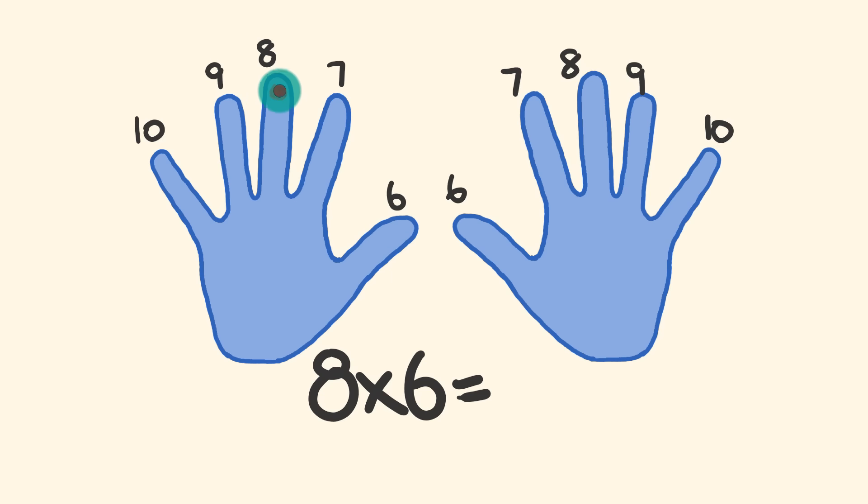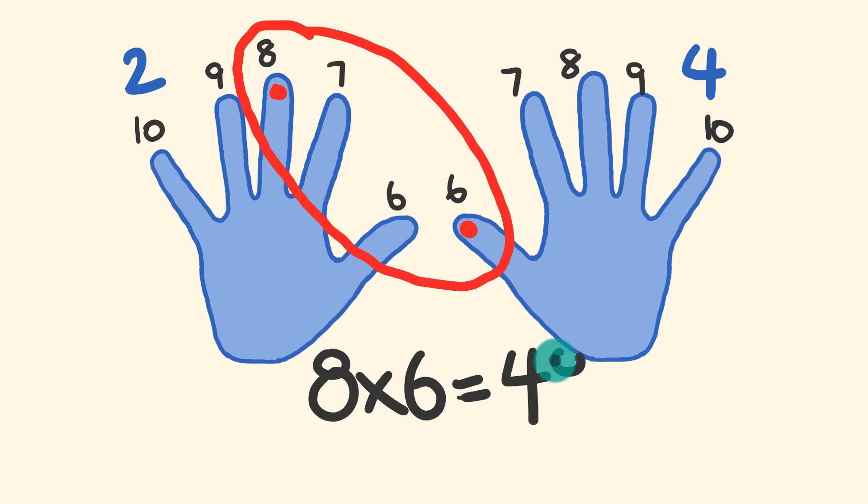So six, seven, eight—that is the third finger along. And on the right hand, we have the very first finger there, the thumb, which is the six. So go through, bunch these guys together, and that gives us the first part of our answer, right? One, two, three, four—our answer is forty-something. Now looking at the other fingers there, we have two fingers on the left hand and we have four fingers on the right hand. Two times four equals eight.